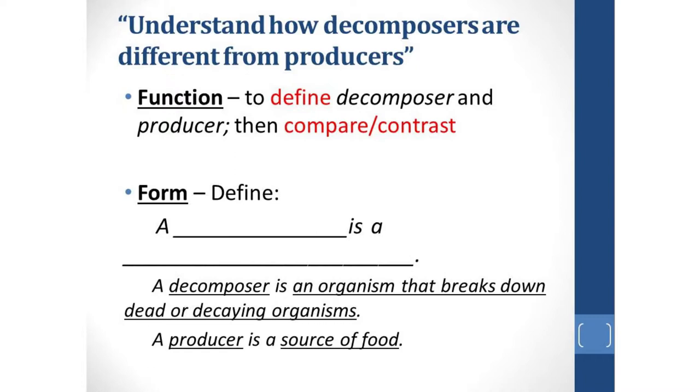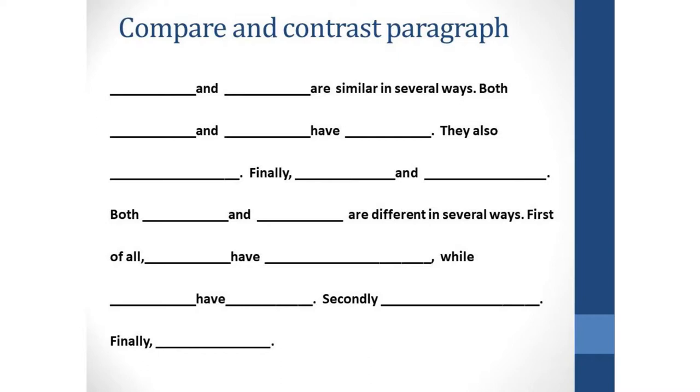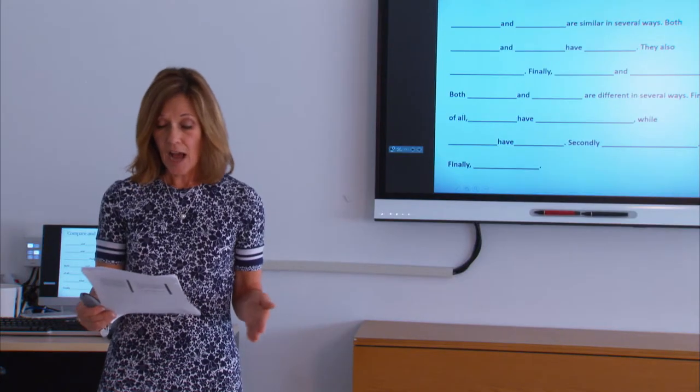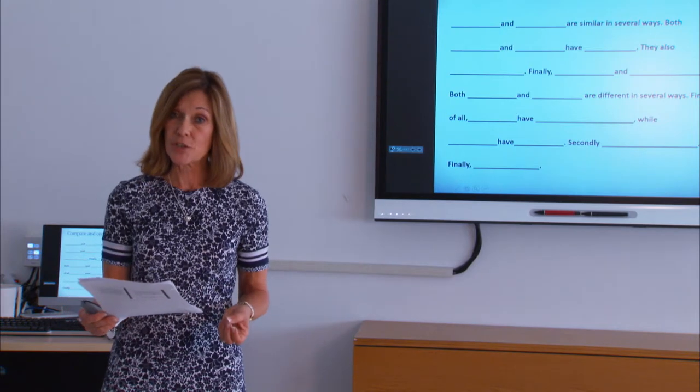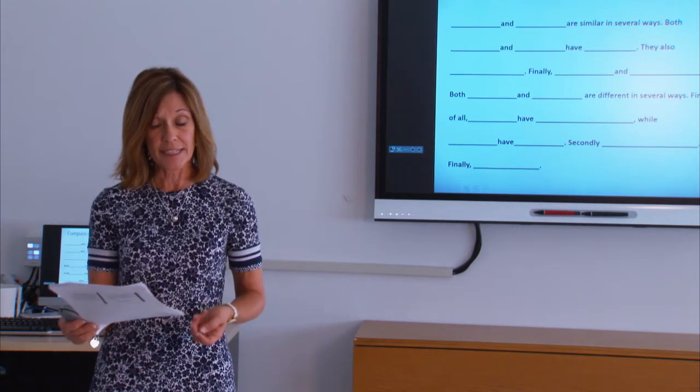Later, when students are comparing and contrasting the two, they could use a paragraph template something like this: Producers and decomposers are similar. And then later in the paragraph, both decomposers and producers are different in several ways. Students can use this pattern along with the academic language of the science unit to express their understanding. When teachers show ELLs the pattern for compare and contrast, students can transfer this to other content areas, such as comparing two characters in a novel or two triangles in geometry.